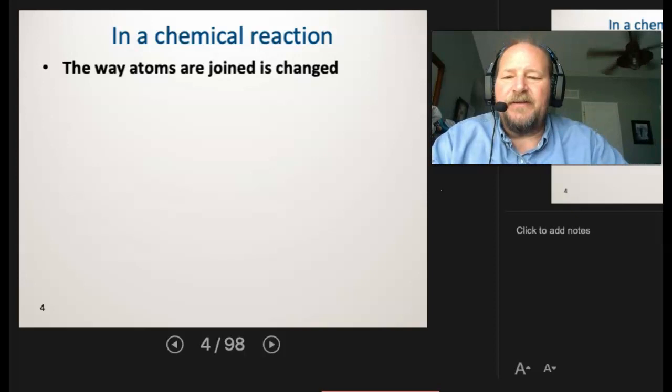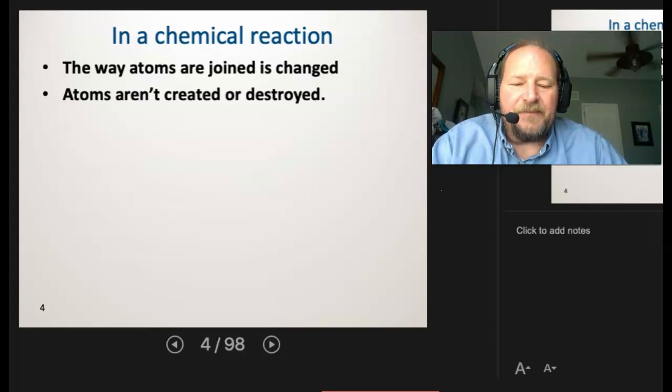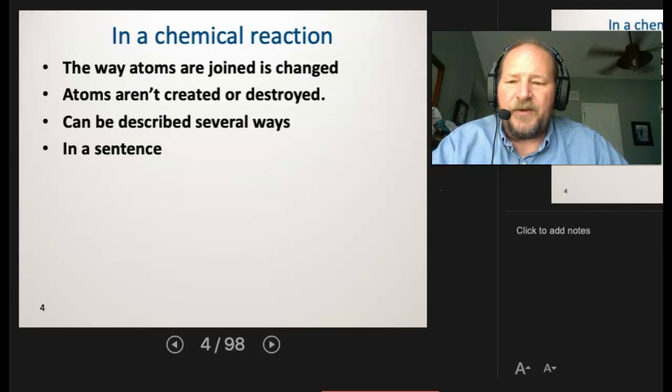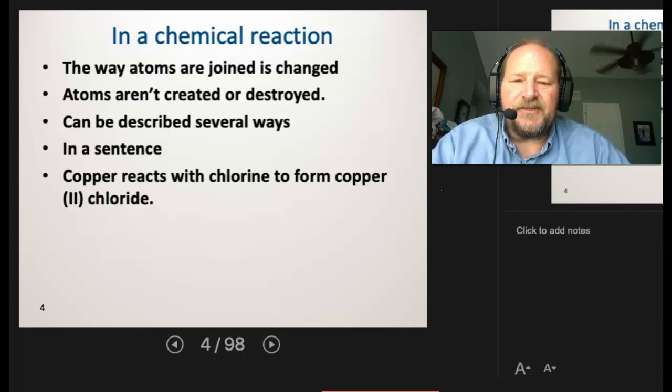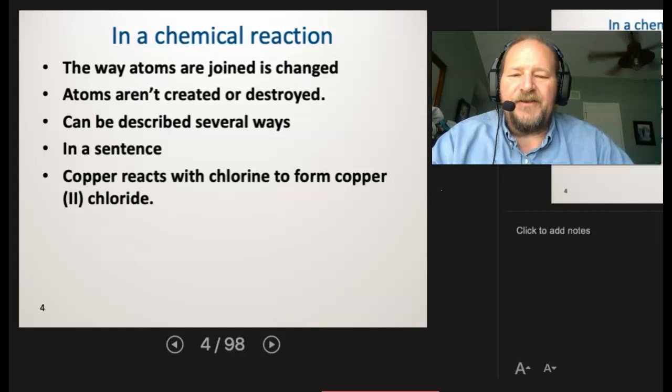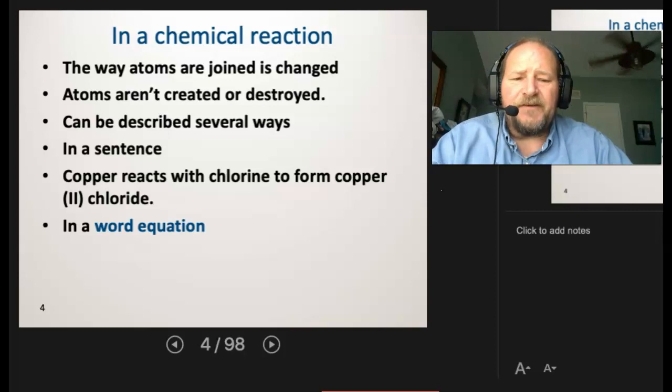So in a chemical reaction, what's going to happen is the things that we start with are going to be broken down into atoms and then rejoined to make new things. In this process, the atoms cannot be created or destroyed. So whatever we start with, we'll have to end up with. And again, we can describe them in several ways, chemical reactions, that is. We can describe it using a sentence, something like copper reacts with chlorine to form copper two chloride. And right away, you can see naming coming back to haunt you. So if you haven't been practicing your naming and you haven't been getting naming down, all of a sudden, it's going to get real complicated real fast. So you can't just push that off to the side and say, OK, I didn't understand it. I didn't learn it. Whatever. I'm going to keep moving. Nope. I'm going to need you to go back and figure out naming.